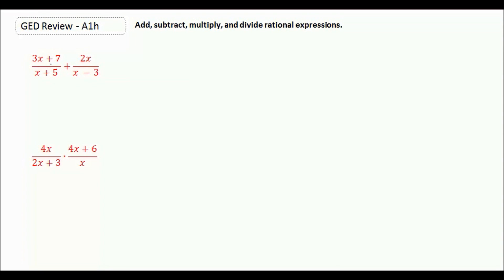Here we have 3x plus 7 over x plus 5 plus 2x over x minus 3. It's just like if we were adding fractions with just numbers. We need to find a common denominator.